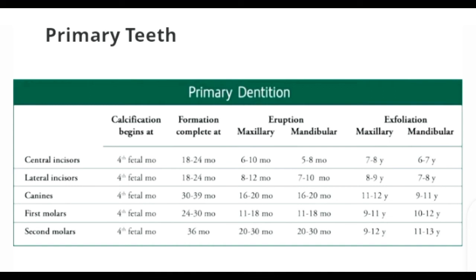Root completion for central and lateral incisors occurs at 12 to 24 months, followed by the first molar and second molar completing formation at 24 to 30 months and 36 months respectively. Formation of the canine completes between 30 to 39 months.